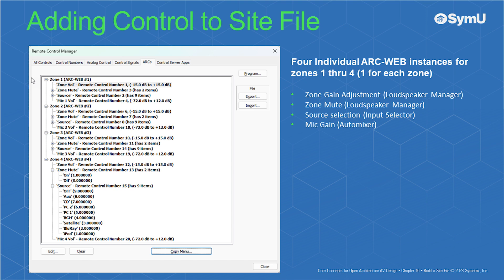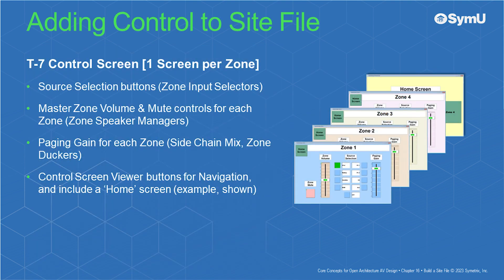Each zone's ArcWeb remote should be unique and only include the following controls — the same as the W series remote: zone volume and zone mute control for that particular zone, source selection for that particular zone, and microphone gain for that particular zone. Each zone's touch screen should include zone gain adjustment and zone mute for that particular zone, source selection for that particular zone, paging gain for that zone, and control screen viewer buttons for navigation between control screens. It is helpful to note that the control screens are not graded by appearance and are only based on the required controls being present.